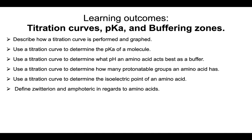Let's come back to the learning outcomes. Make sure you can describe what a titration curve is and how it's graphed. Be sure you can use a titration curve to determine the pKa of a molecule, the buffering pH, how many protonatable groups are on a molecule, and its isoelectric point — especially for amino acids. Finally, define what a zwitterion is and what the term amphoteric means in regards to amino acids.